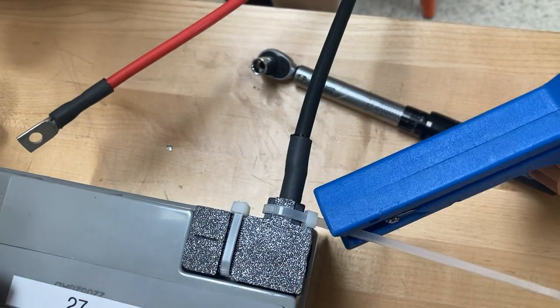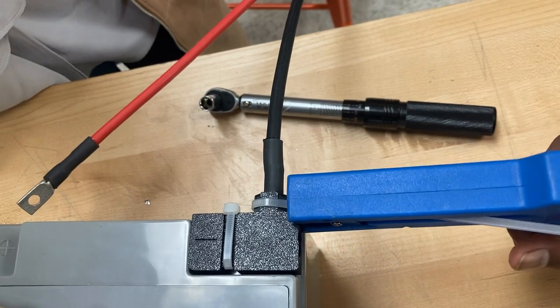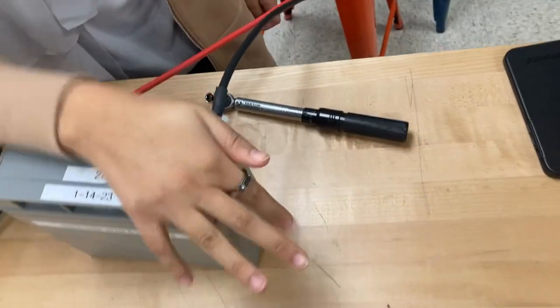And then tighten with the zip tie gun and release it. There we go. That's how you install a battery.